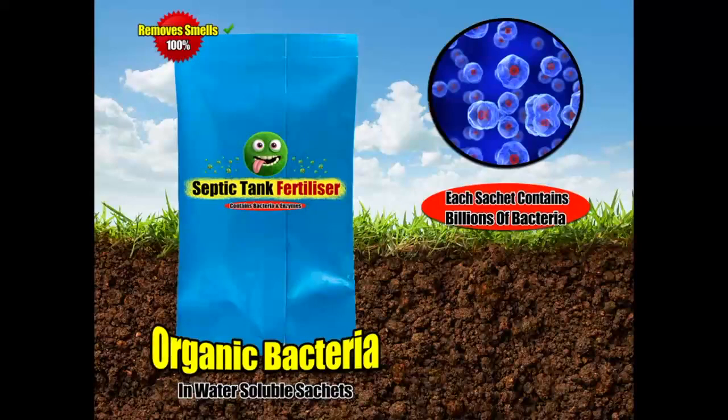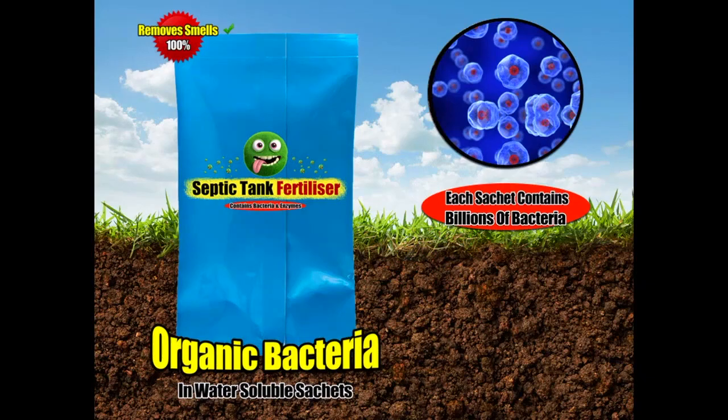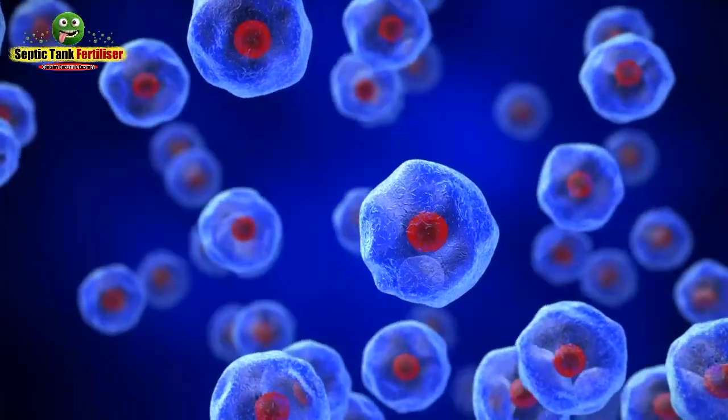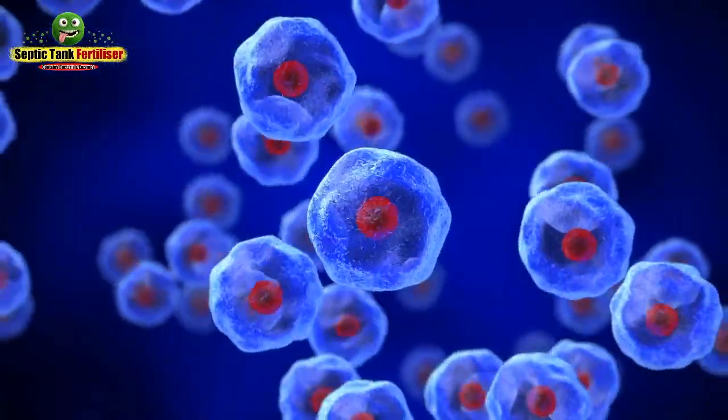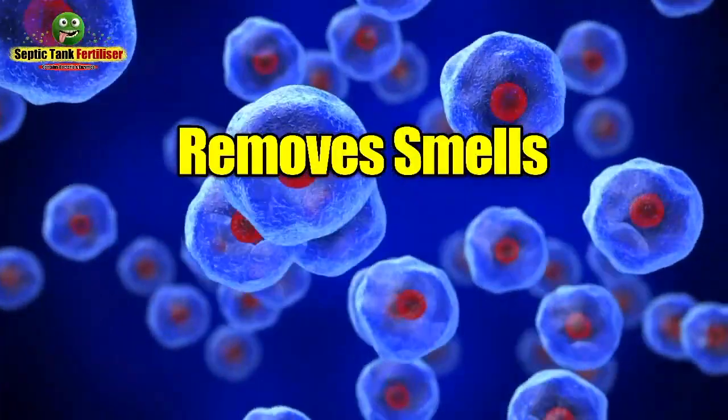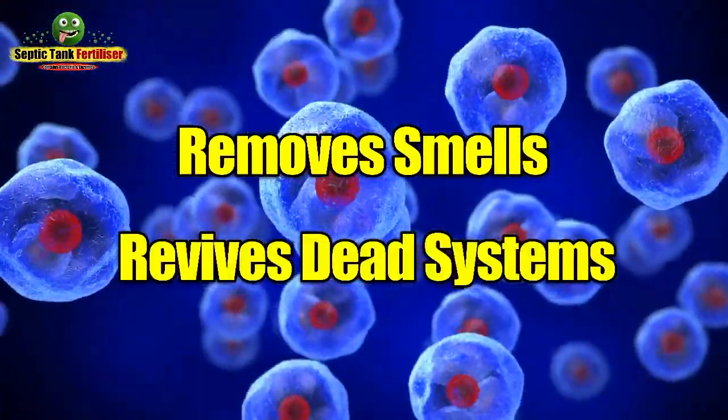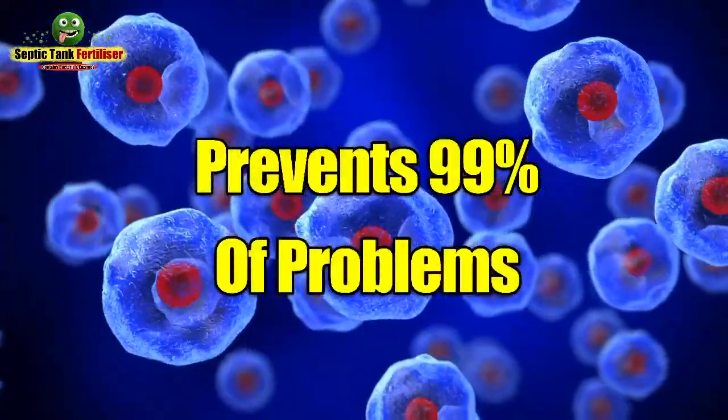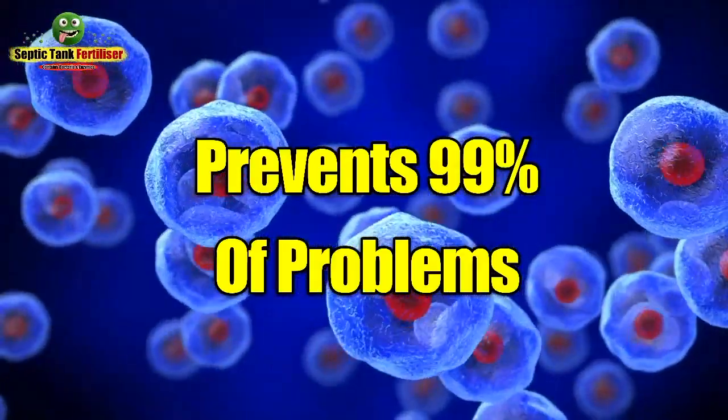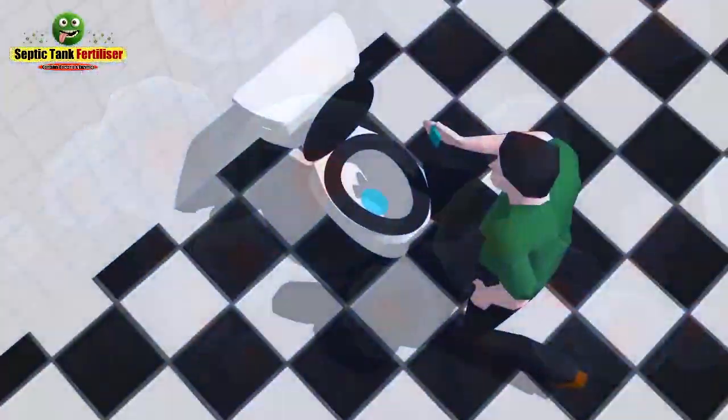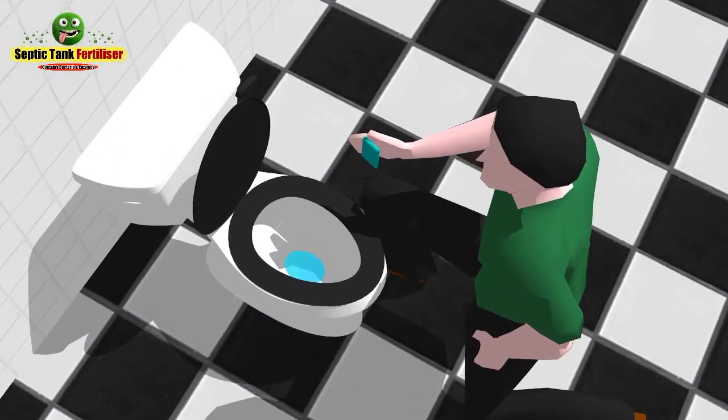How does Septic Tank Fertiliser work? In each of the 12 water-soluble sachets, there are billions of organic bacteria and enzymes which remove smells, revive dead systems and prevent 99% of all septic tank problems.